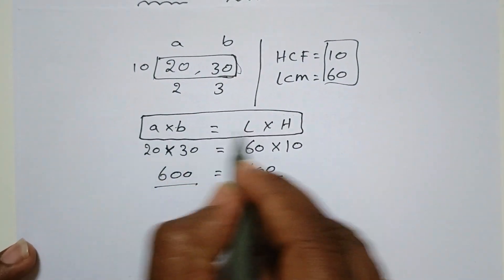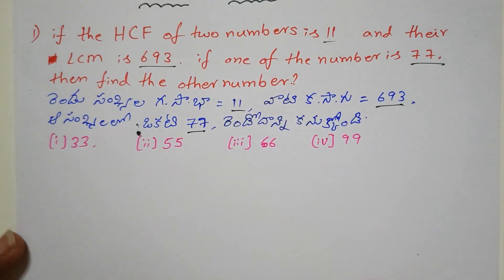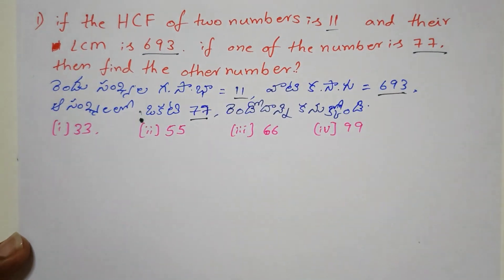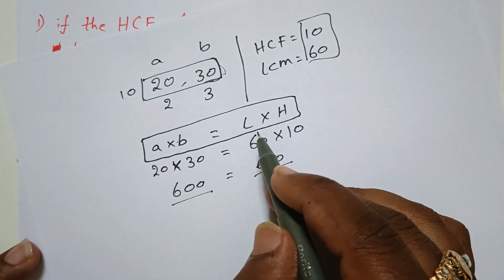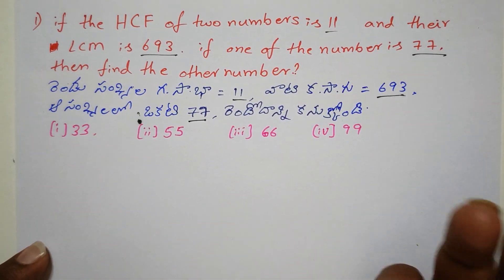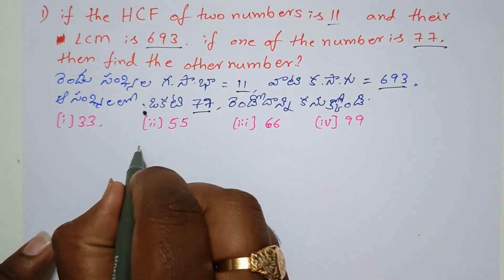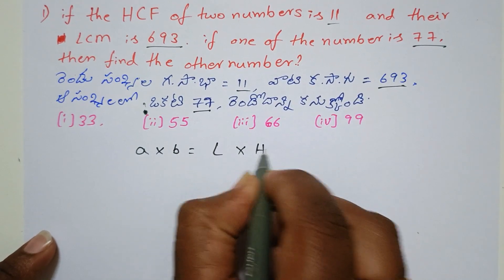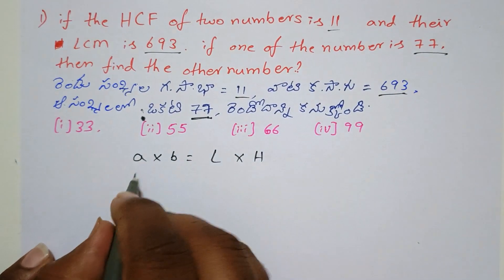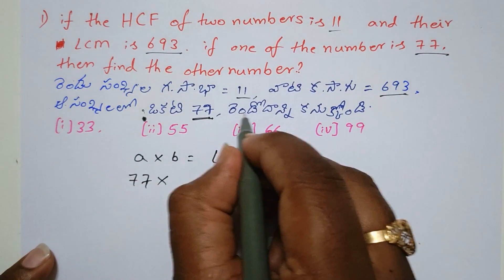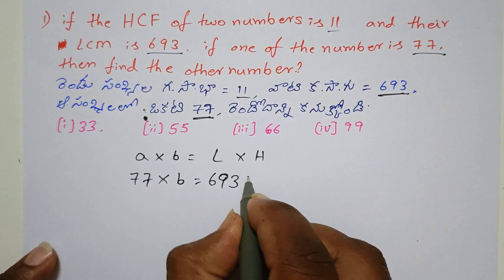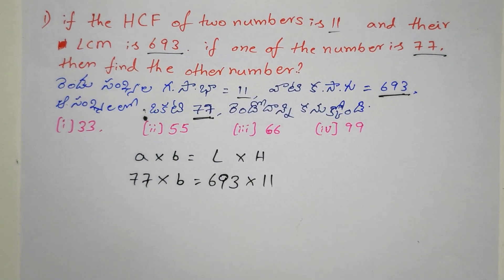So, A into B equals LCM into HCF. Let's write A into B equals LCM into HCF. Now let's write the cancellation method to solve the problem.